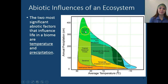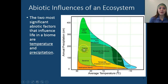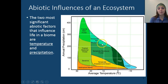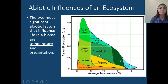Tropical rainforests receive the most precipitation and have a very high temperature. As we go down in precipitation, we still have tropical seasonal forests, then savannas, then subtropical deserts. As we go lower in temperature, you'll see polar regions, tundra, and taiga — receiving very little rain. Going up in both temperature and precipitation, you start to see temperate rainforests and temperate deciduous forests, which are kind of in the middle for rainfall and average temperature.